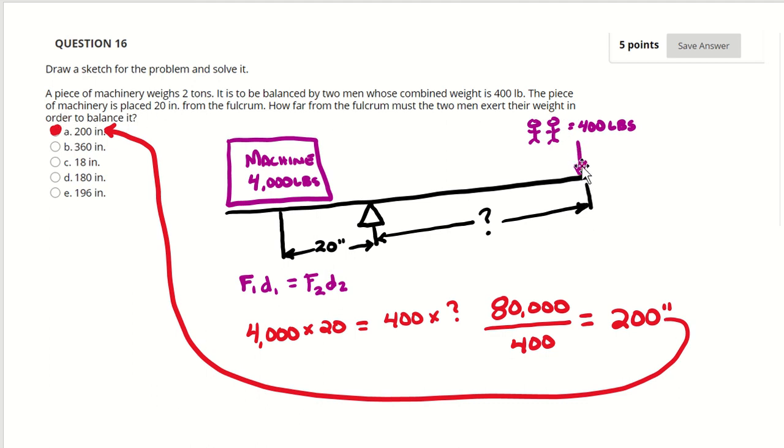How far from the fulcrum must the two men exert their weight in order to balance it? So we need to balance it with 400 pounds, but we need to know how far we need, how much of the board or pipe needs to be on this side of the fulcrum.